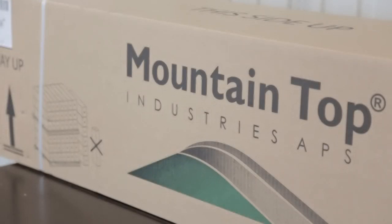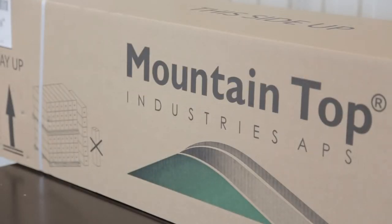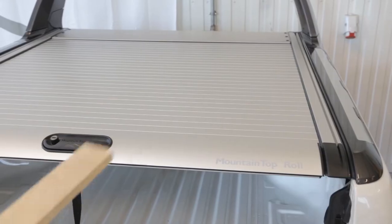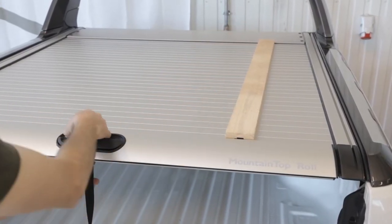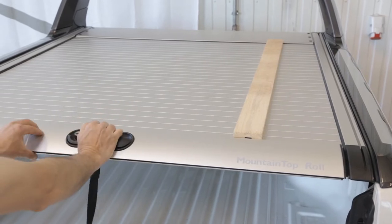For removal and mounting, please see the video for mounting of roll cover. Adjust length of a wooden stick and mount it between the canister lid and the rear profile.